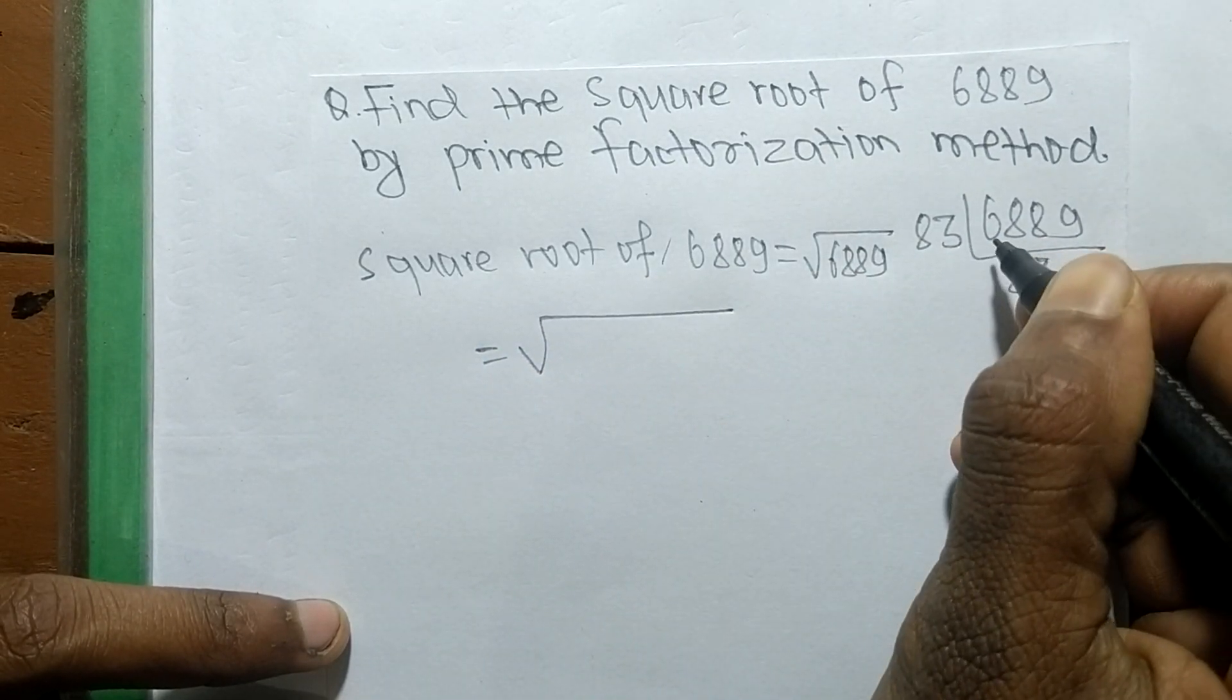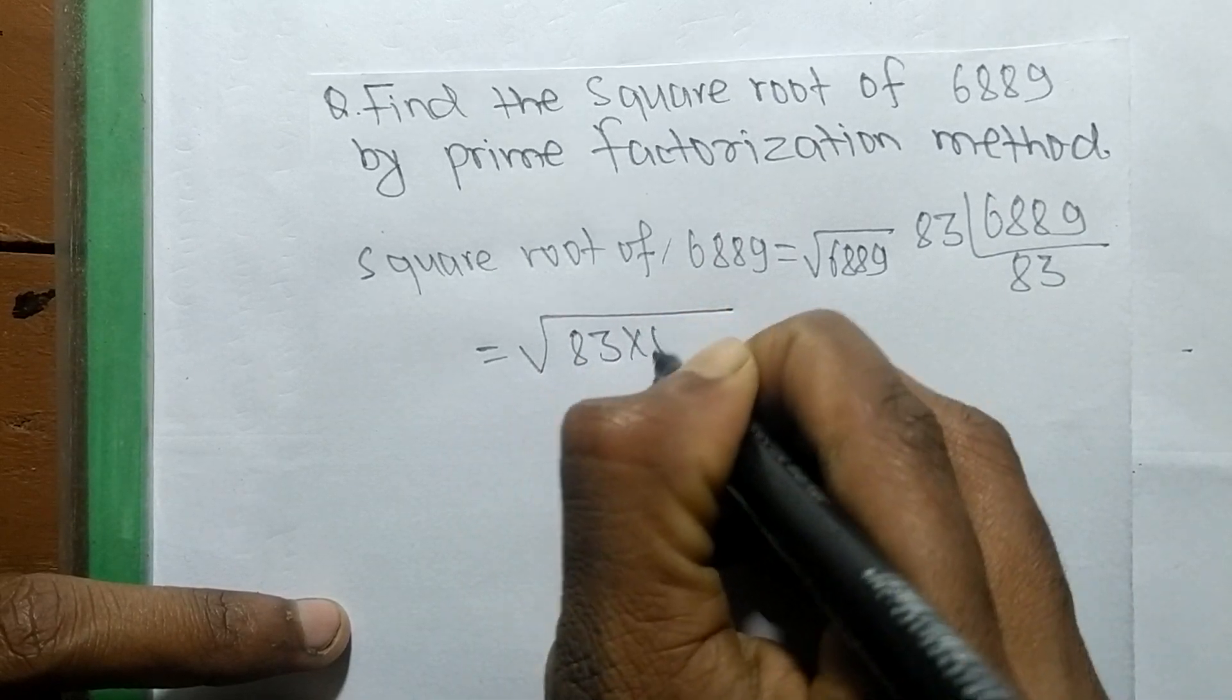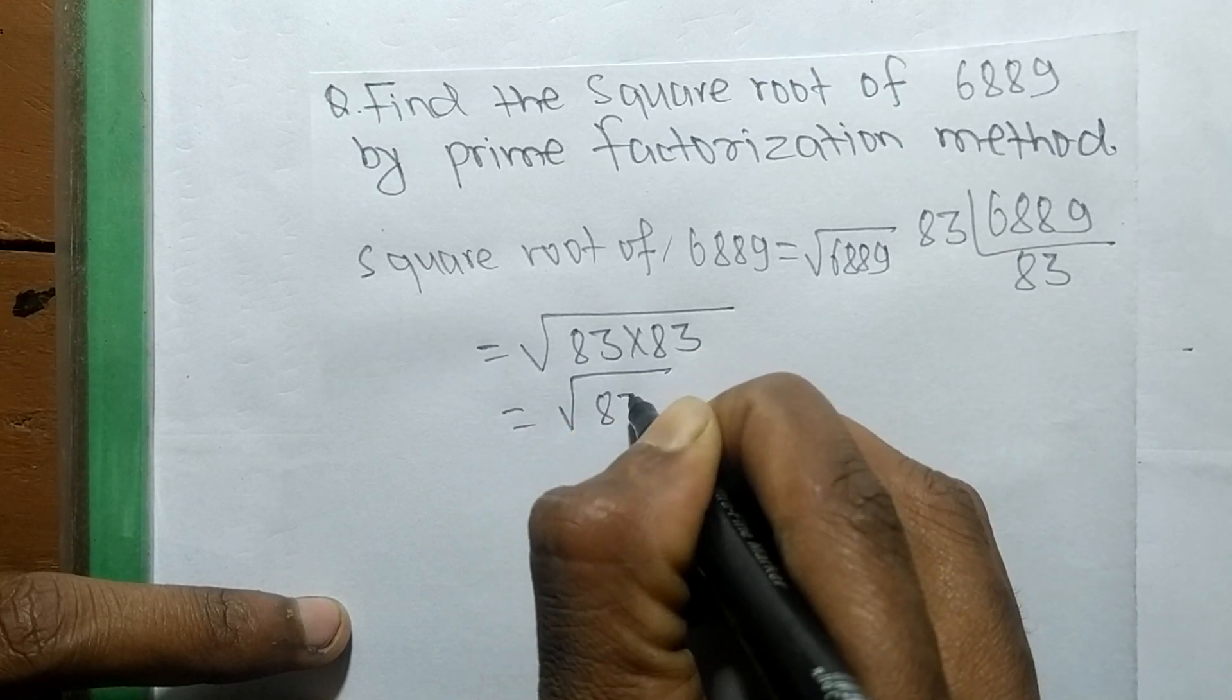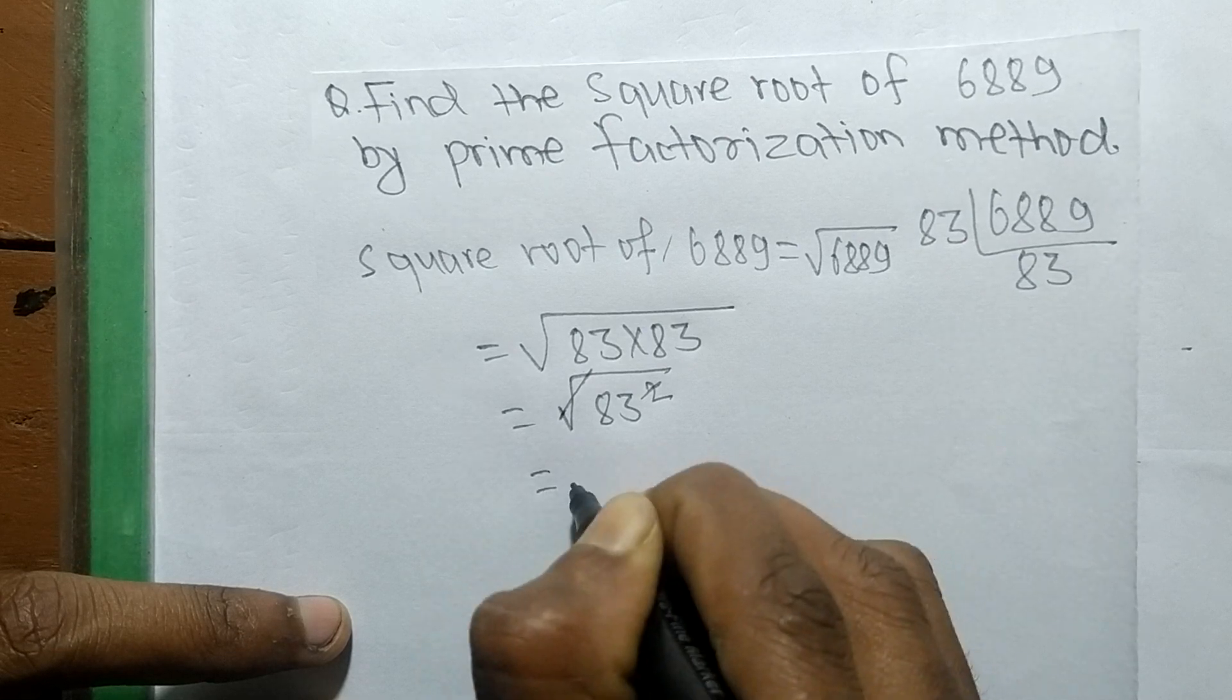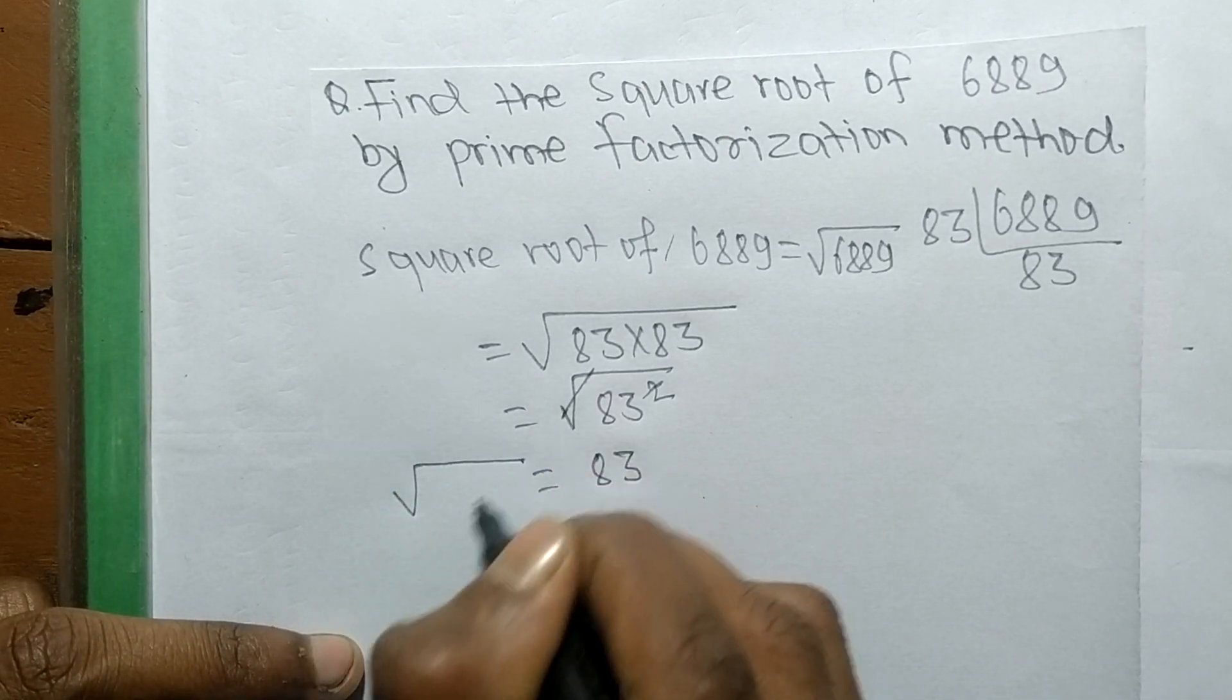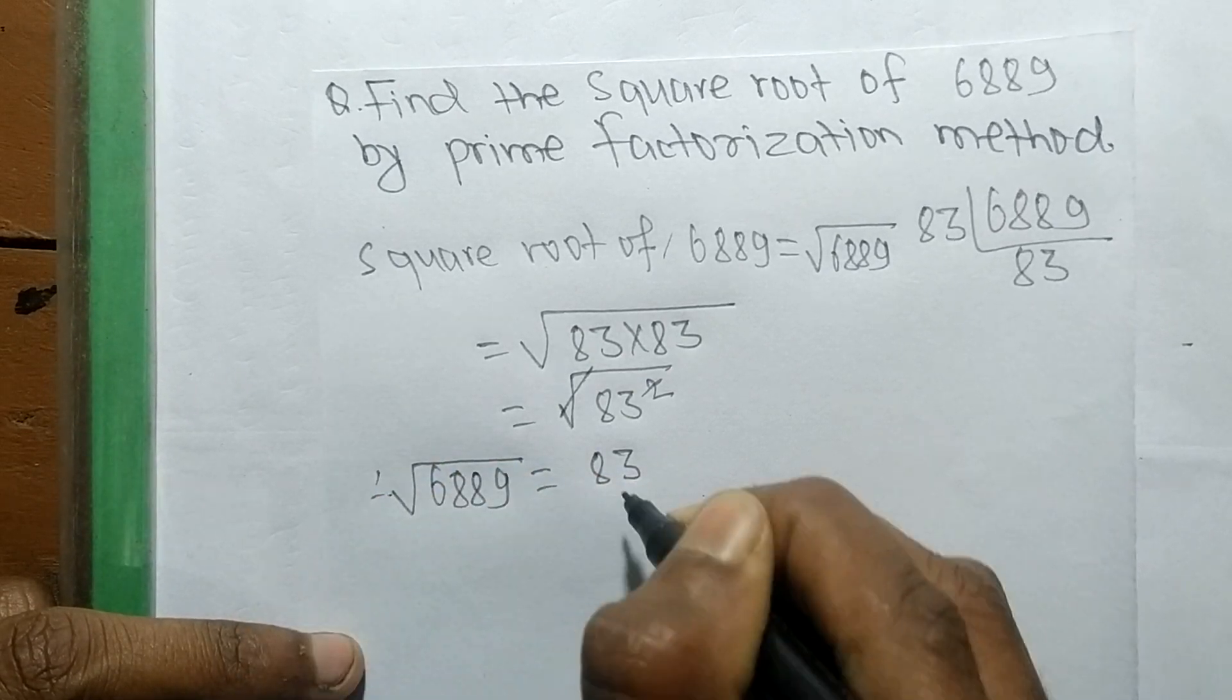So now prime factors of 6889 is 83 times 83, so it is 83 squared. Square and square root cancel and the remaining number is 83. So the square root of 6889 is equal to 83.